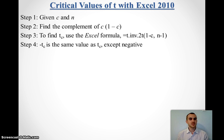So, say we need to find a t-score. We need to know our confidence level and our sample size. First thing we do is we find the complement to our confidence level, the 1 minus c.